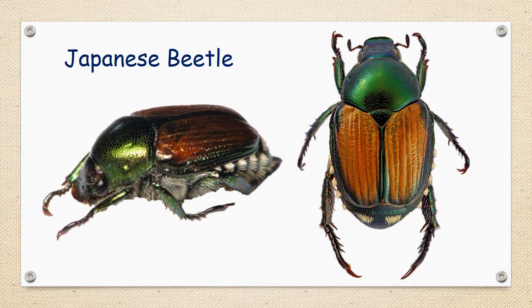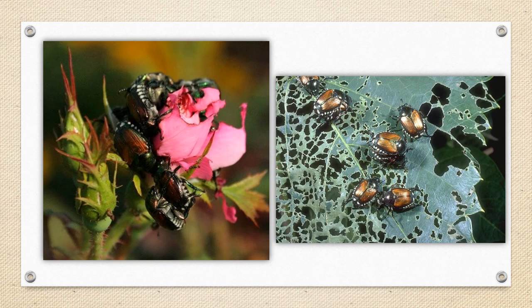The Japanese beetle. This one's pretty, but he is not our friend — he is a foe. If you look at the pictures, you can see why. We've got a little rose bloom here and these beetles are eating up every bit of it. They will also eat the leaves on your plants, so that makes them a pest and a foe.